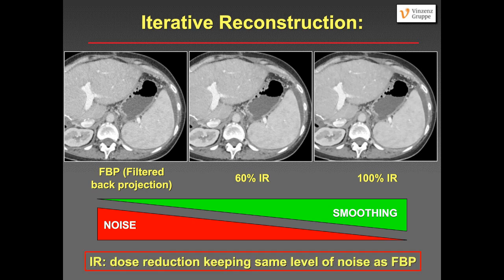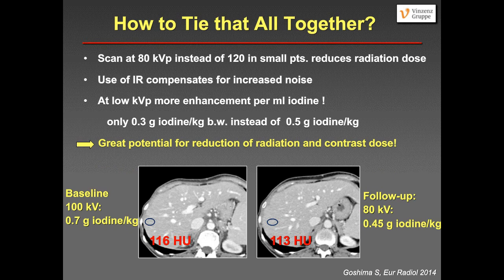Using iterative reconstruction, you can reduce noise, or if you want the same noise level, you can reduce the radiation dose compared with filtered back projection. If you scan at 80 kVp instead of 120 kVp in small patients, you reduce dose and iterative reconstruction compensates for increased noise. The nice additional benefit is that scanning at lower kVp gives you more enhancement per milliliter of iodine. For example, where you used 0.5 g iodine/kg at 120 kVp, you can go as low as 0.03 g iodine/kg at 80 kVp.